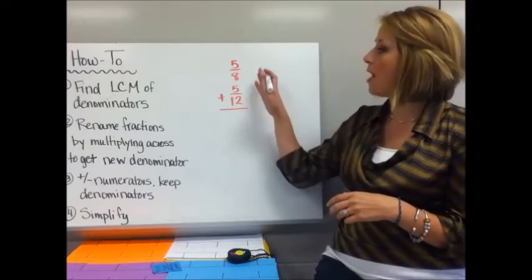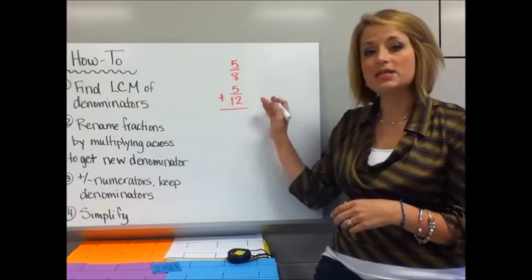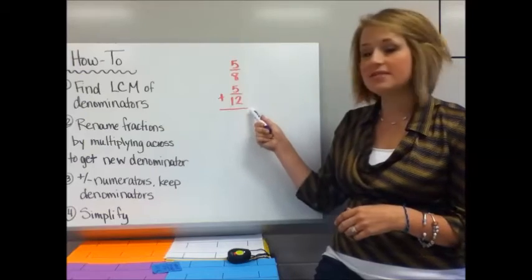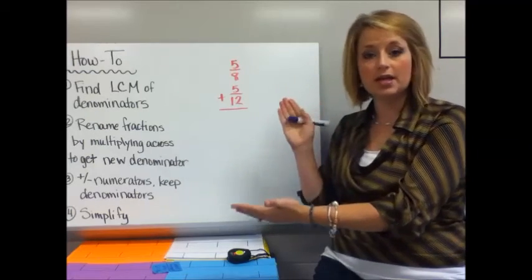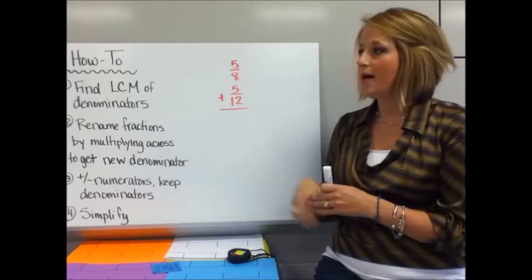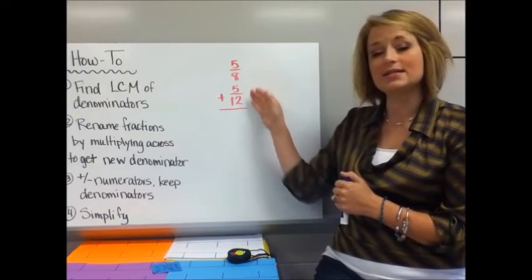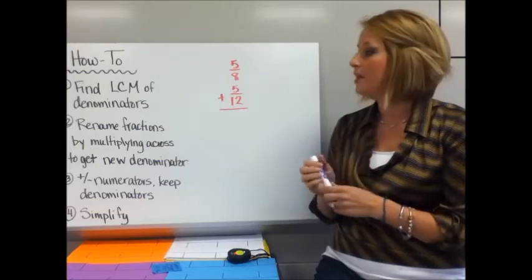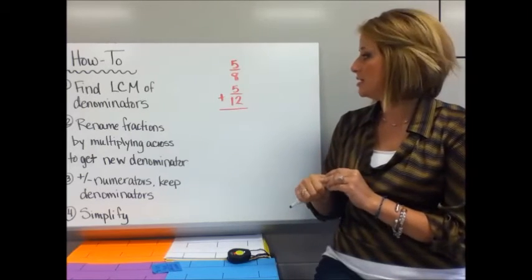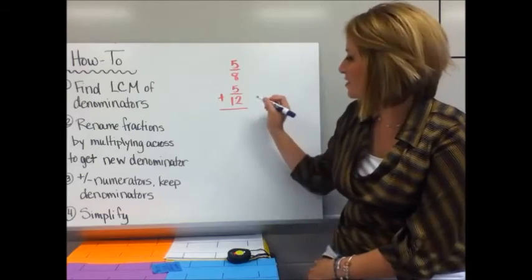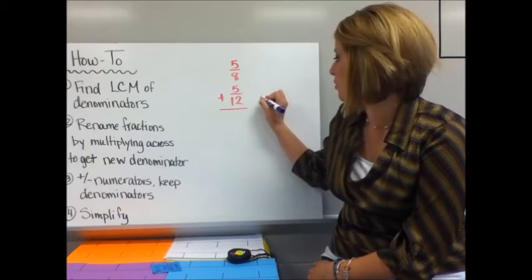So with our example problem, we have 5/8 plus 5/12. Notice that I have stacked these fractions. A lot of times they'll be written horizontally, and you can definitely do it that way, but especially when you're starting out with adding and subtracting fractions, I think it's wise to stack them because it makes converting them to the common denominator much easier. So that common denominator is going to be 24.